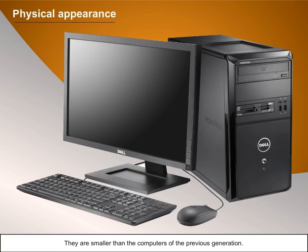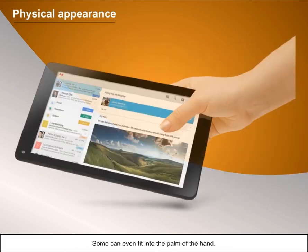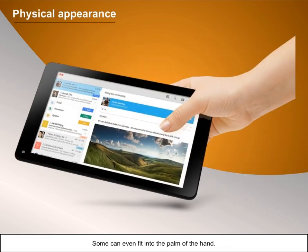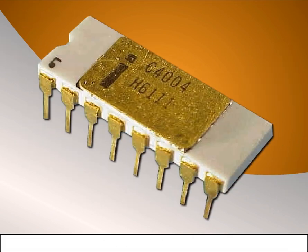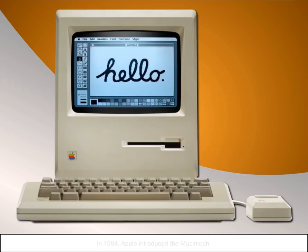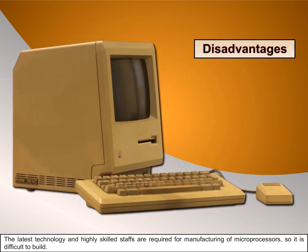In terms of physical appearance, fourth-generation computers are smaller than those of previous generations — some can even fit into the palm of the hand. Notable examples include the Intel 4004 chip, the first microprocessor, and in 1984, Apple introduced the Macintosh.